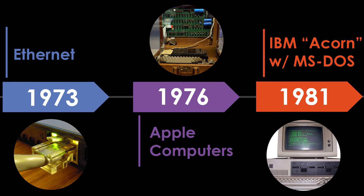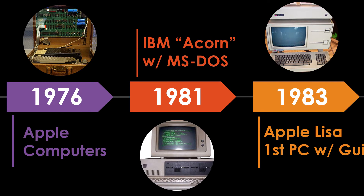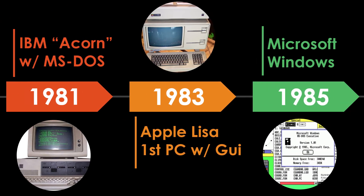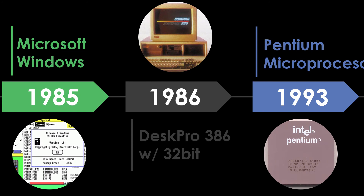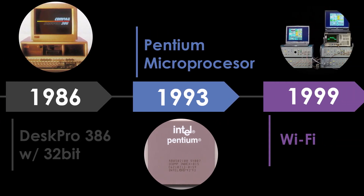In 1976, Apple Computers was started by Steve Jobs and Steve Wozniak. In 1981, the first IBM PC, codenamed Acorn, is introduced using Microsoft's MS-DOS OS. In 1983, Apple's Lisa is the first PC with a graphical user interface. In 1985, Microsoft announces Windows.